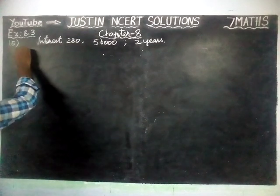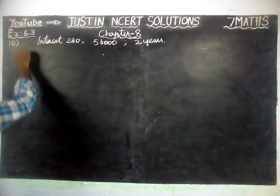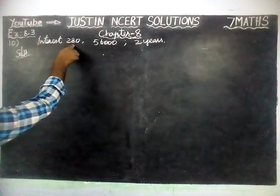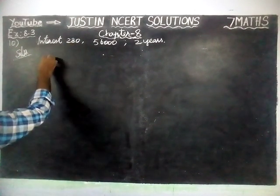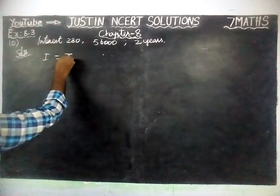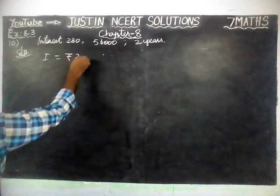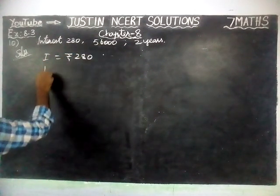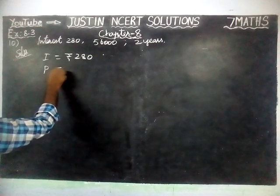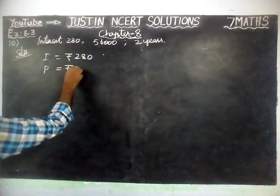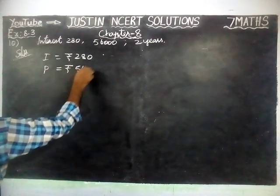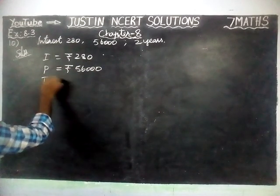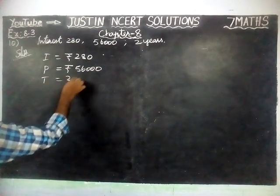First, we will write the given information. Here, interest is equal to Rs. 280, principal amount is equal to Rs. 56,000, and time is equal to 2 years.